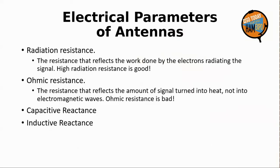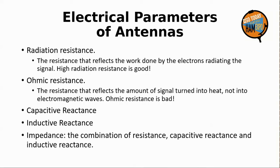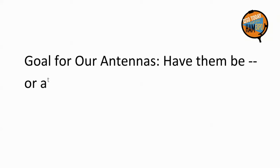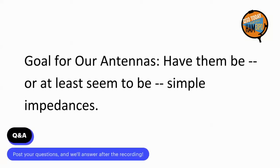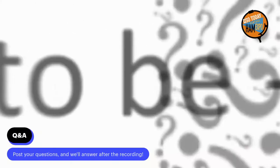So in an antenna, we find radiation resistance, ohmic resistance, capacitive reactance, and inductive reactance, and all that combines to create the impedance of the antenna. Impedance does not necessarily contain any reactance — it can be purely resistive, in which case we call it a simple impedance. If reactance gets into the picture, we call it a complex impedance. Our goal for our antennas is to have them be, or at least seem to be, purely resistive simple impedances.